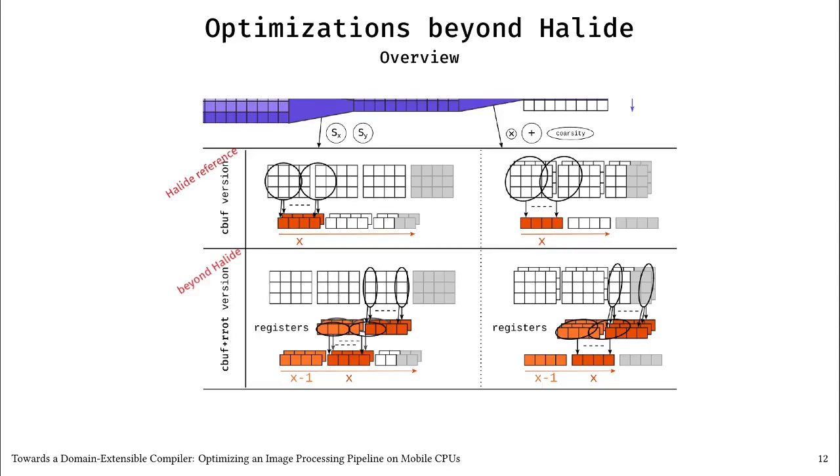The previous CBUFF strategy reproduces the optimizations from the reference Halide schedule. However, we can express additional optimizations in our system that are not supported by Halide. The two-dimensional convolutions that are found in the Harris operator, Sx and Sy and plus, can be separated into a vertical convolution followed by a horizontal convolution. This separation then enables a register rotation optimization that is similar to circular buffering. Register rotation also leverages spatial and temporal locality, but is more fine-grained and operates on registers instead of memory. We name this new version CBUFF plus RROT.